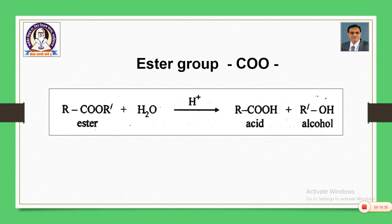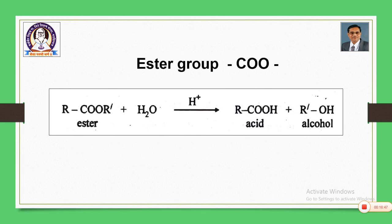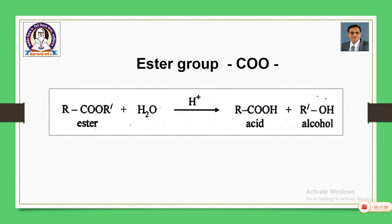If the compound contains an ester: since acid with alcohol gives ester, the reverse reaction can be carried out. Ester is hydrolyzed by acid hydrolysis, giving an acid and an alcohol — RCOOH and R'OH. If hydrolysis gives acid and alcohol, then it is an ester. If condensation with alcohol gives an ester, then it is an acid.